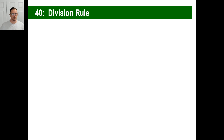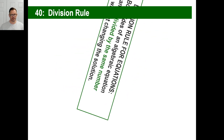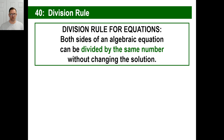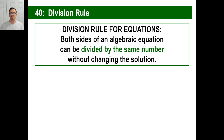Division rule. The division rule is the same as the multiplication rule — you can divide both sides of an algebraic equation by the same number and it won't change it at all. To summarize: if you multiply the left side of the equation by something, you must do it to the right side. Whatever you do to one side of an equation, you do exactly the same thing to the other side.